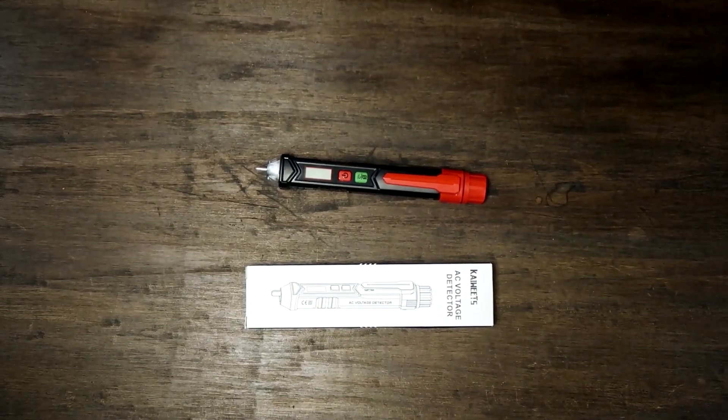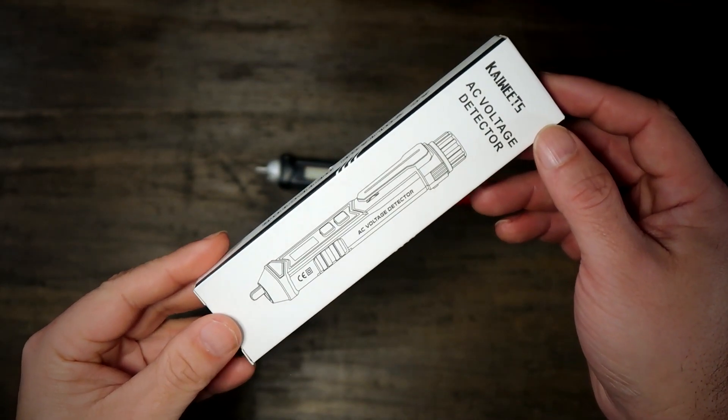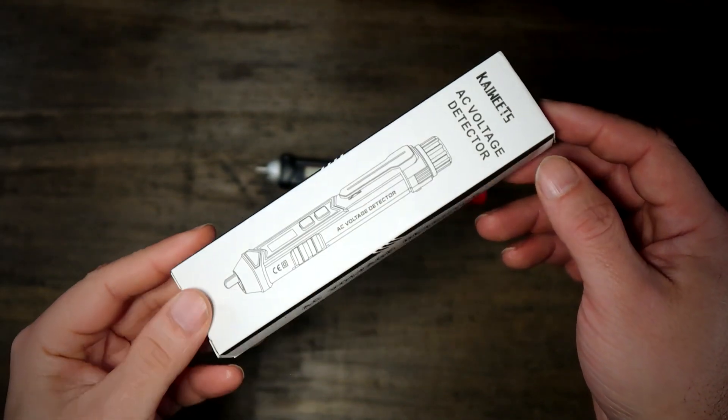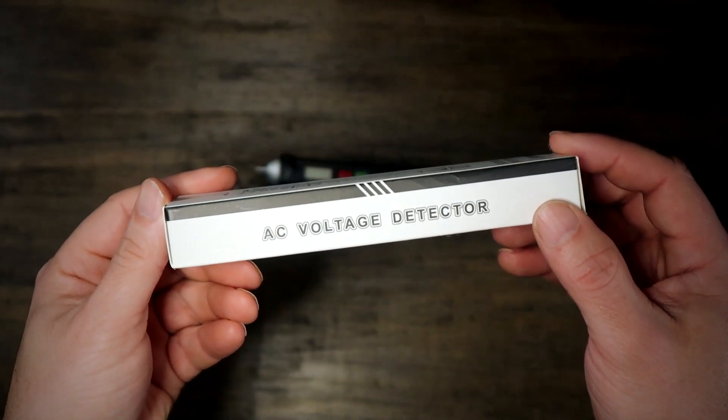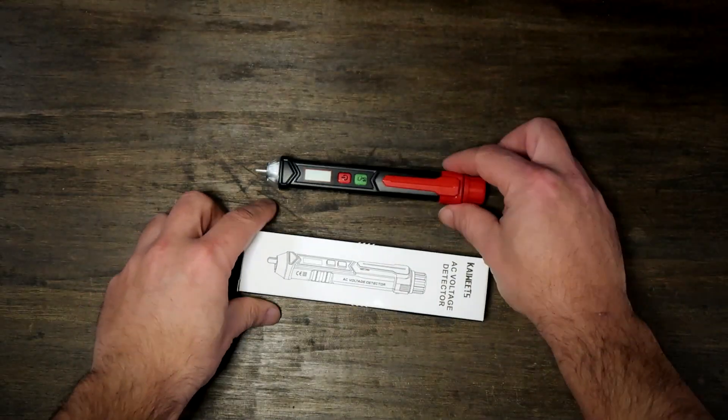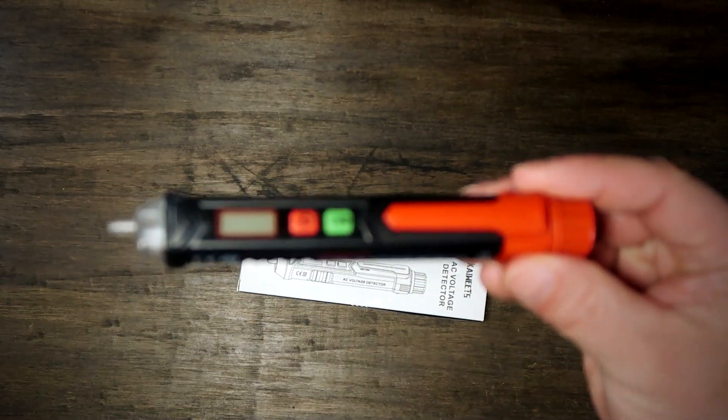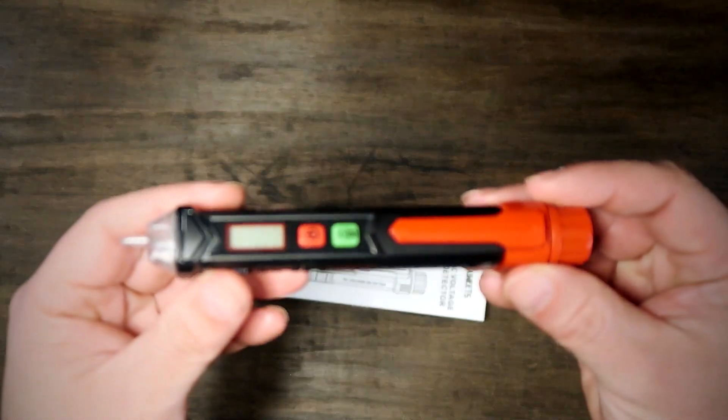So here we have a voltage tester. This is a non-contact, meaning you don't have to get near any live wires or sockets to test a dual range AC 12 volt to 1000 volt, 48 volt to 1000 volt. So this is a live wire tester